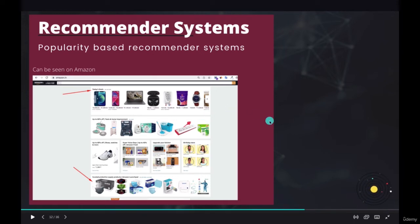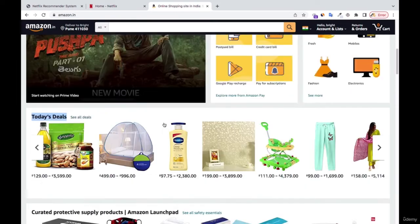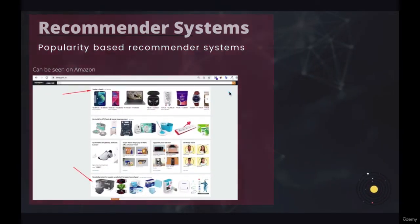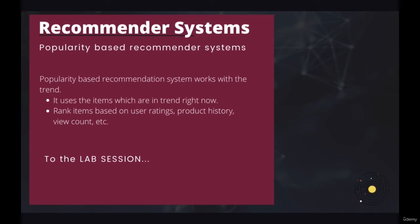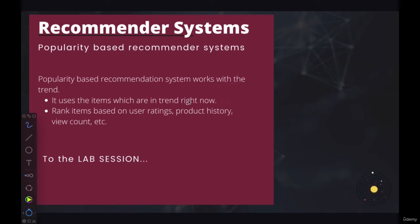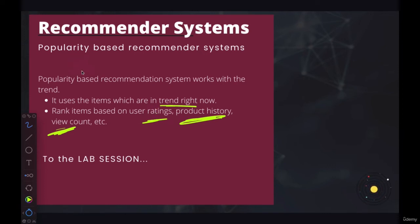That is popularity-based recommendation systems. Now let's see how they actually implement these. They go with the trend — what is trending right now is what they base on. Before identifying the trend, they look at what most people are rating highly and what people are actually watching the most — view count and things like that. This kind of recommendation does not depend on customer A or customer B specifically; it depends on the entire population — what the entire population is watching most, or which movies have the highest rating, is what they recommend.